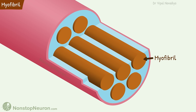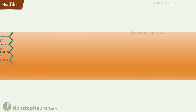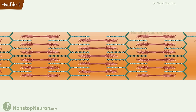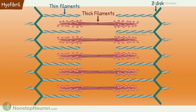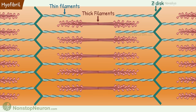First, myofibrils. They are cylindrical and arranged parallelly. Each muscle fiber contains hundreds to thousands of such myofibrils. Each myofibril is a chain of regularly repeating units called sarcomere. Sarcomere consists of myofilaments which are responsible for muscle contraction. They include thin filaments and thick filaments. Edges of sarcomeres are joined at Z-discs, and the same structure is repeated in all the sarcomeres.